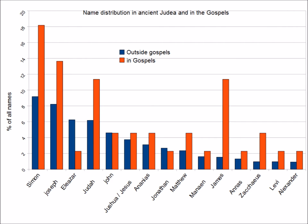We have much less information on the name distributions from other regions, but we do have limited data from Egypt from around the same time. There are 45 occurrences of the most popular seven names, the top two being Eliezer and Sabateus. The Gospel frequency distribution does not fit this distribution nearly as well, but we must remember that in this case there will be much more random noise as both data sets are much smaller than Ilan's one from Judea.